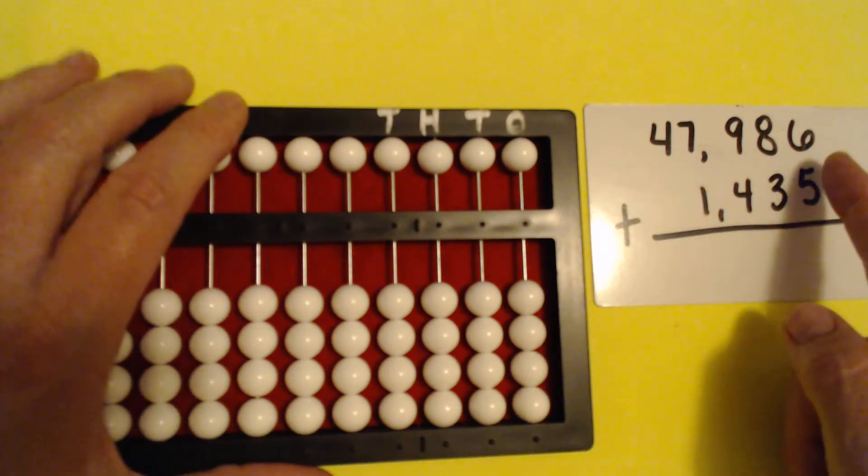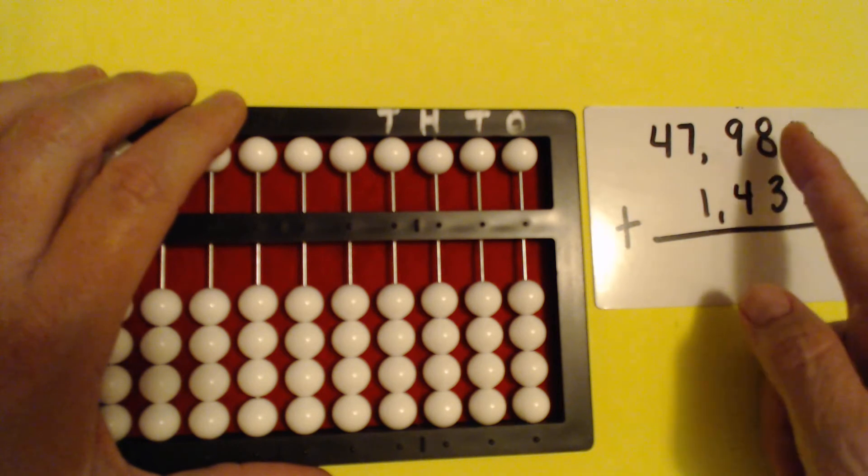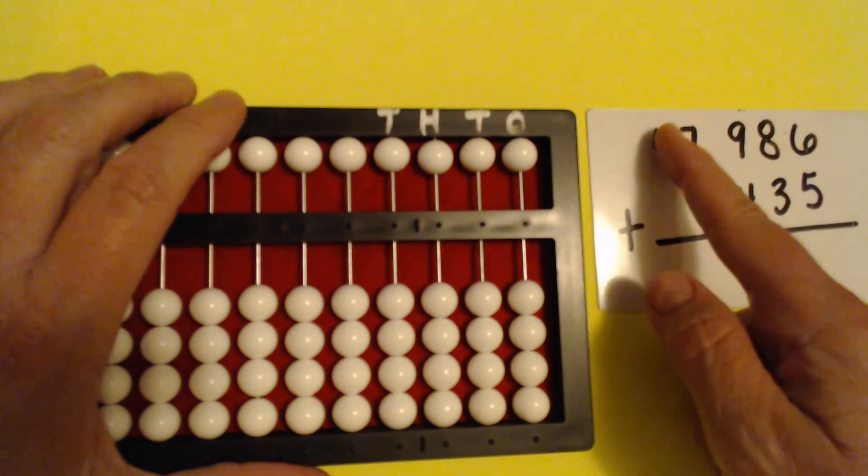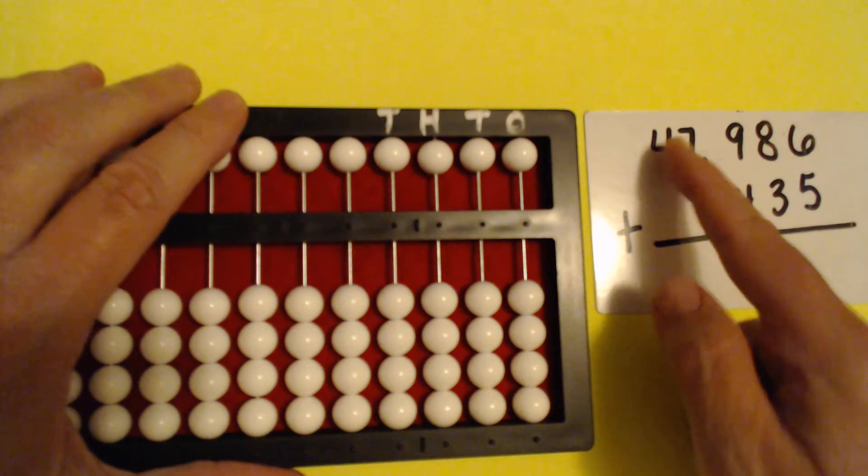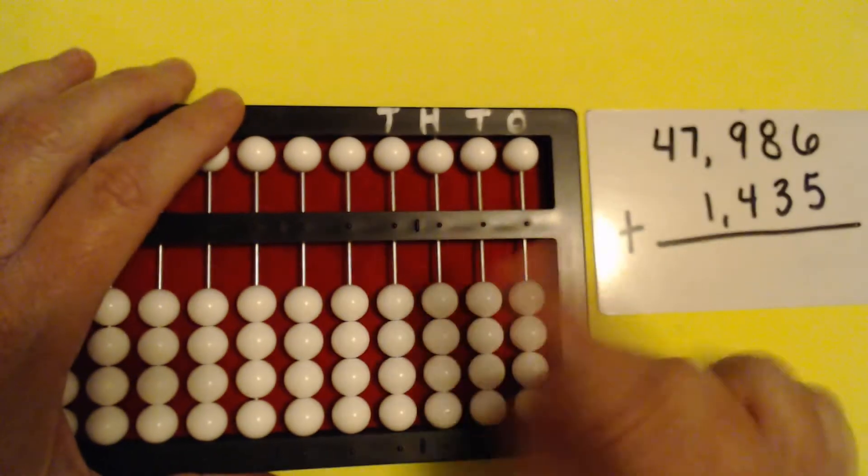Let's set. And this, now look, we're going ones, tens, hundreds, thousands, ten thousands. So we need to go to the ten thousands place on our Abacus.